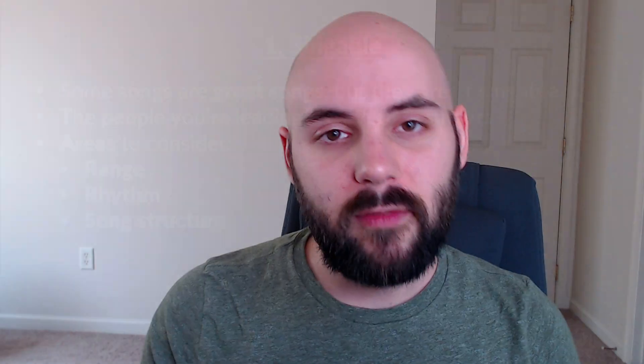The next thing is rhythm. If a song has a complicated rhythm, it's going to be really hard for the majority of your church to sing along. Think of syncopated lines where the melody comes in just a little bit after the beat — that's hard for people to sing along with. They want to come in on the downbeat. So if you've got a bunch of that throughout a song, it might sound really cool musically, but it's not very singable for your church.